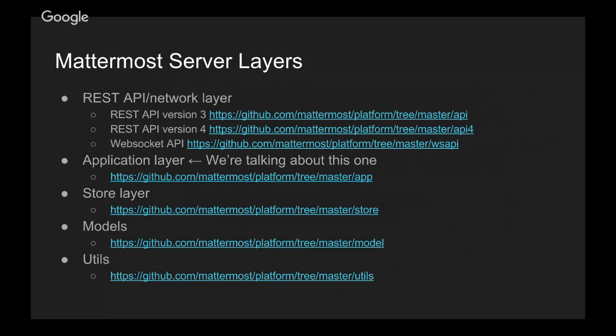The first server layer is essentially the REST API or network layer. If you want to interact with the server, this is the way you do it — you make a standard HTTP request to the API, it does some request parsing, and then passes the data to the application layer through a specific function. The application layer will usually talk with the store layer to talk to the databases and perform logic or manipulation on the data, then return it back to the API network layer for response building and sending back to the client.